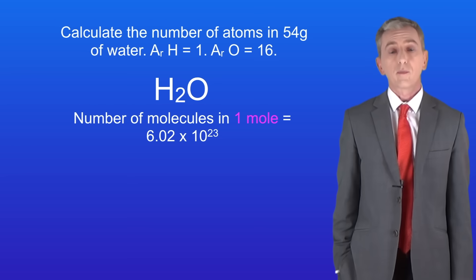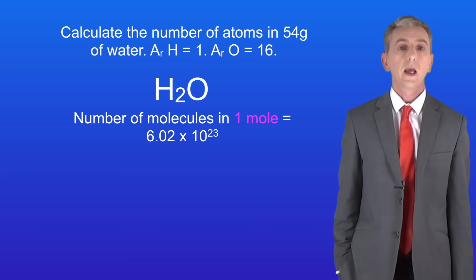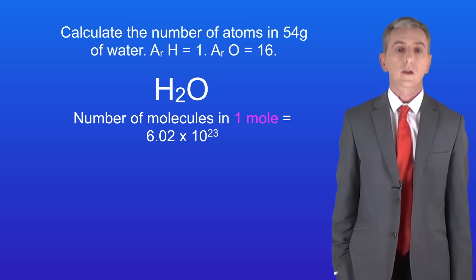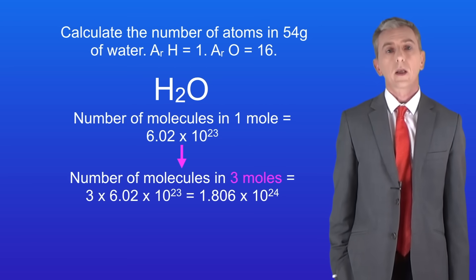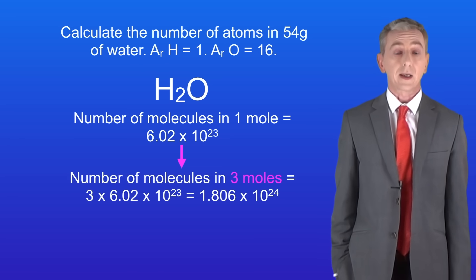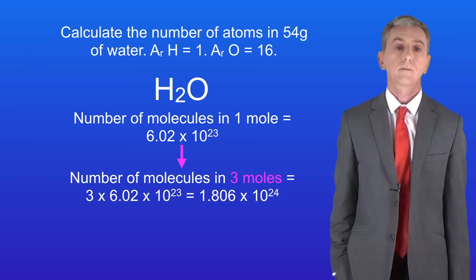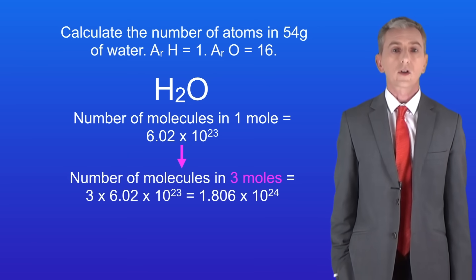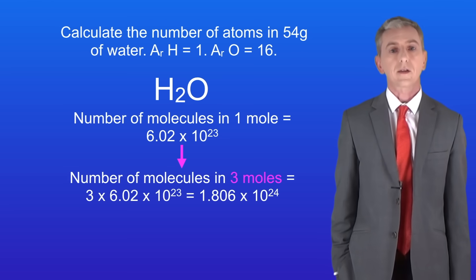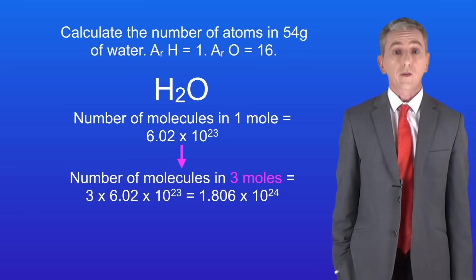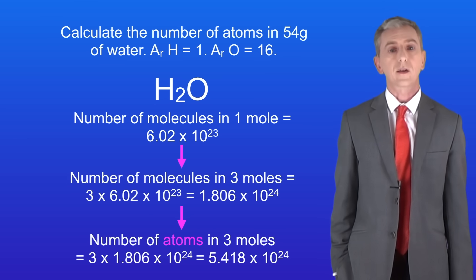We know that the number of molecules in one mole is 6.02 times 10 to the power of 23 — Avogadro's constant. However, we've got three moles of water, so that means we've got 1.806 times 10 to the power of 24 molecules of water. The question is asking for the total number of atoms, and each molecule of water contains three atoms. This means that the final number of atoms is 5.418 times 10 to the power of 24.